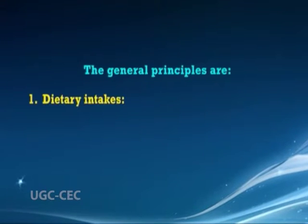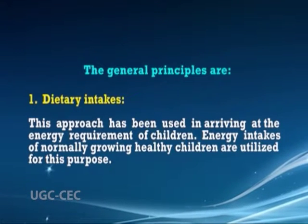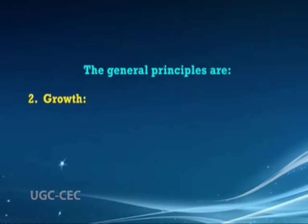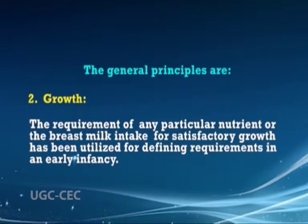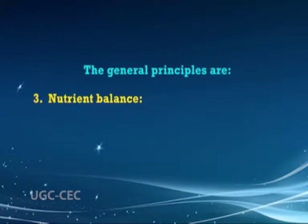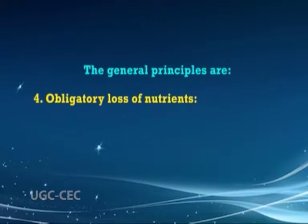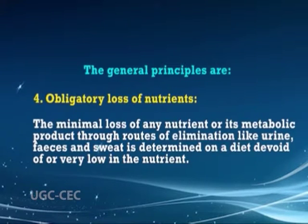The general principles are: First, dietary intake — this approach has been used in arriving at the energy requirement of children; energy intakes of normally growing healthy children are utilized for this purpose. Second, growth — the requirement of any particular nutrient from breast milk intake for satisfactory growth has been utilized for defining requirement in early infancy. Third, nutrient balance — the minimum intake of nutrients for equilibrium, where intake is equal to output in adults, and nutrient retention consistent with satisfactory growth in children, have been used widely for arriving at protein requirements. Fourth, obligatory loss of nutrients — the minimal loss of any nutrient or its metabolic products through routes of elimination like urine, feces, and sweat is determined on a diet devoid of or very low in the nutrient.